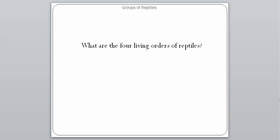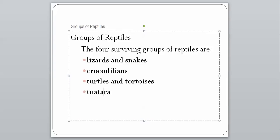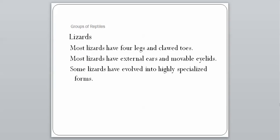Now let's look at the four living orders of reptiles alive today. Our four orders are: lizards and snakes, crocodiles, turtles and tortoises, and the more obscure tuatara. Starting with lizards — most lizards have four legs and clawed toes, most have external ears and movable eyelids, and some have evolved into highly specialized forms. Lizards are one of our most common reptiles and among the first to come along evolutionarily.